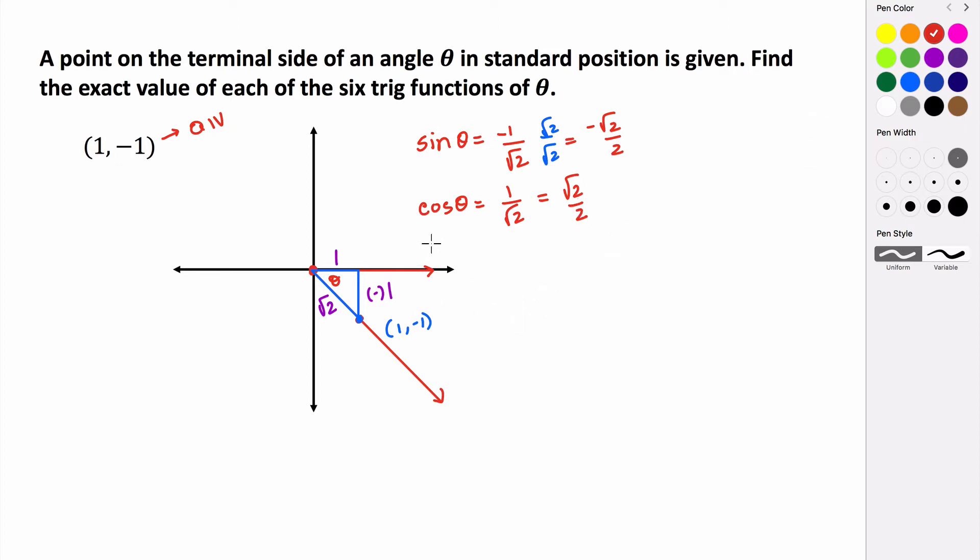And then the tangent of θ is going to be the opposite over the adjacent. So -1 over positive 1, which is just equal to -1.